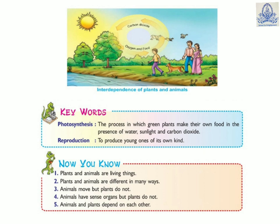Look at this picture: plants are giving oxygen and food to us and to animals, and we are giving carbon dioxide to the plants. Now, keywords — Photosynthesis: the process in which green plants make their own food in the presence of water, sunlight, and carbon dioxide. Reproduction: to produce a young one of its own kind.